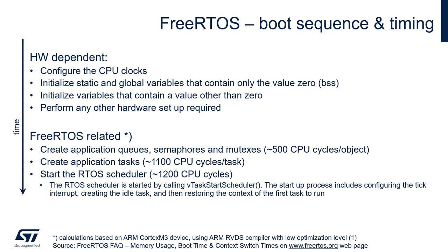Then it is creating the application tasks, which is a bigger part — more or less 1100 CPU clock cycles per task. And it is starting the RTOS scheduler, which takes more or less 1200 CPU clock cycles.